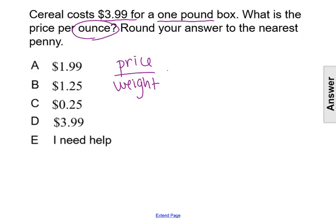We can set up the rate that it would be 3.99 over 16. And then we're trying to figure out what would be the price over one ounce instead of the 16 ounces.